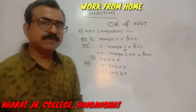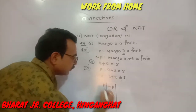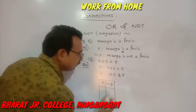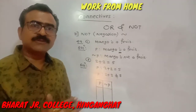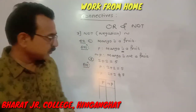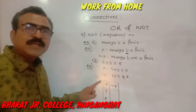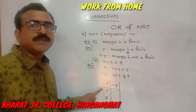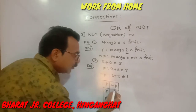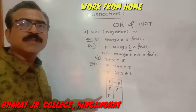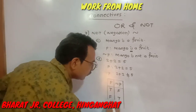Now let us learn the truth table for negation. Write down the statement p and its negation ¬p. If there is a statement, there are two possibilities: either the statement is true or false. If the statement is true, then its negation is always false. And if the statement is false, then its negation is true.